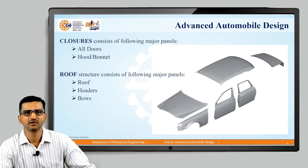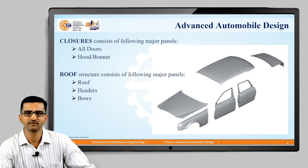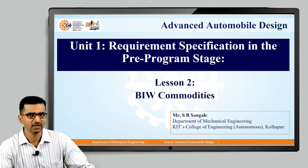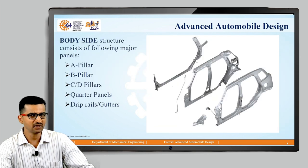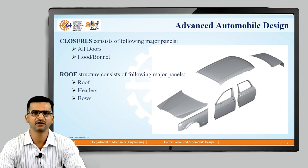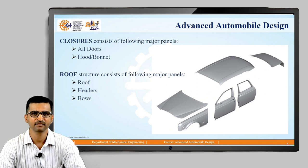Closures are the structures which we can open and close — all four doors, the rear tailgate, and the front bonnet. The last category is the roof, whose function is to protect the passenger compartment from environmental elements and to protect passengers in case of rollovers. This concludes Lesson 1, in which we discussed the introductory part of BIW, how it is made, the basics of the BIW concept, and types of chassis. In the next lecture we are going to discuss further things. Thank you.